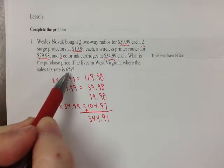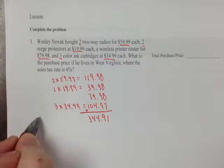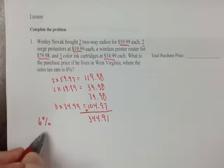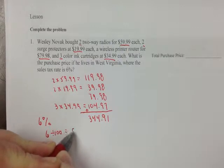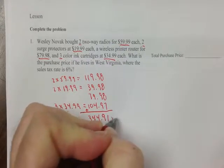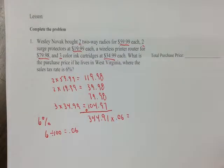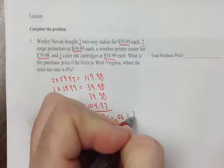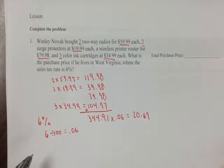Remember, like we did in the last section, sales tax is a percent — 6%. Six percent is not a real number, so you drop the percent sign, divide by 100, and it's 0.06. So $344.91 times 0.06 — your sales tax will be $20.69. That's rounded to two decimals; there are some digits out to the right.